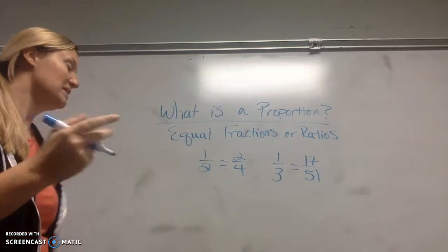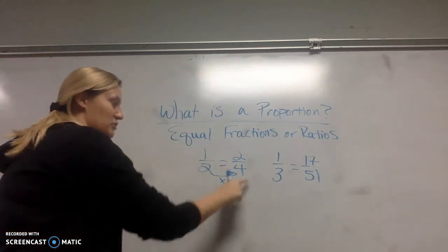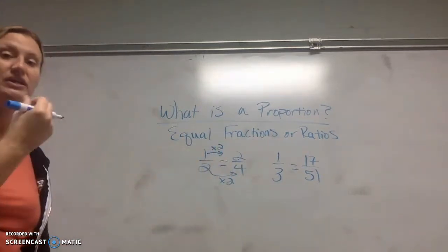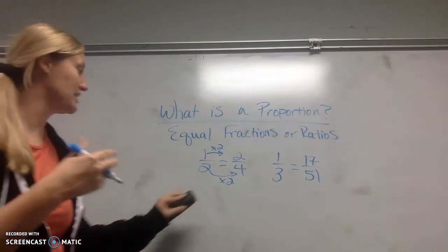Another thing you can do is mental math. You can say, hey, I know I would take two times two to get four. So if I take one times two, do I also get two? Yes. So again, this is a proportion, kind of that mental math type thing.